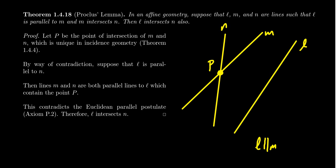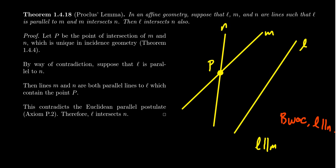We're going to do this by proof by contradiction. Let's suppose that L is parallel to N. By way of contradiction, we assume that L is parallel to N.